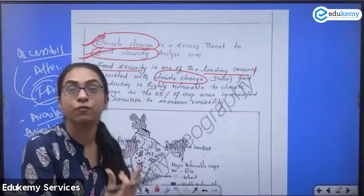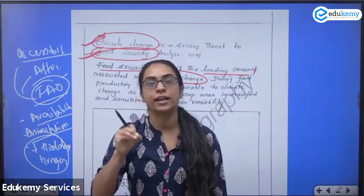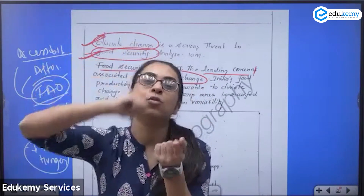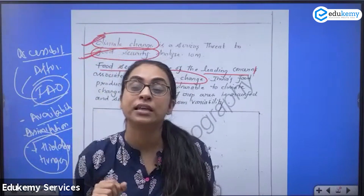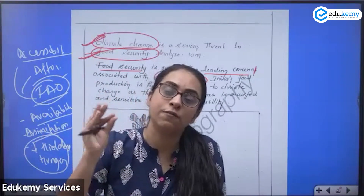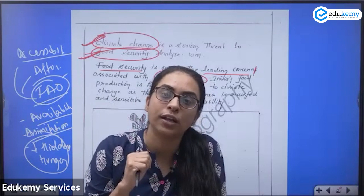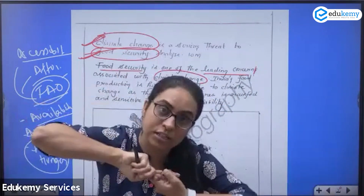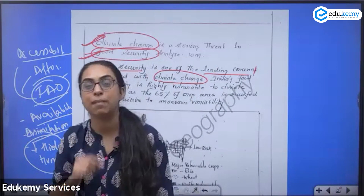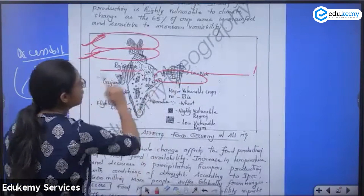India can be more vulnerable — nearly 50 to 60 percent of agriculture is dependent on monsoon. The major crop production depends on monsoon and we know the monsoon is erratic. So obviously climate will impact food security. Food security and climate change are interlinked, especially for India, and you can substantiate this with a diagram.